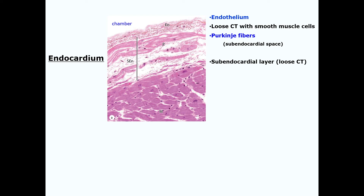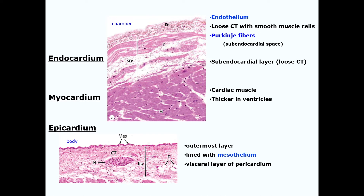Now we'll take a closer look at the characteristics of each layer. First, we have the endocardium, the innermost layer — it is larger in the atria than in the ventricles. Second, we have the myocardium, which is much larger in the ventricles, a distinguishing characteristic between the two heart regions. Finally, we have the epicardium, the outermost layer which faces the body and is lined with mesothelium.